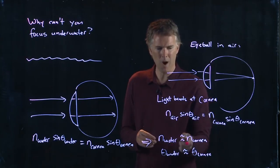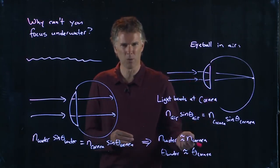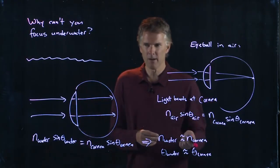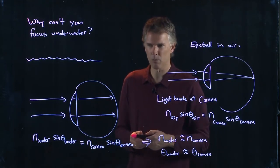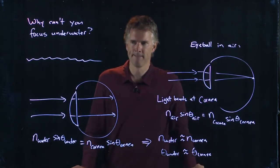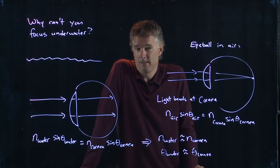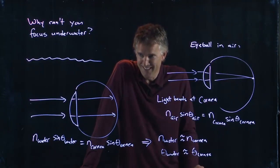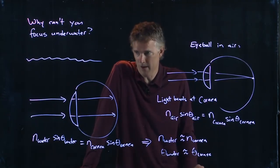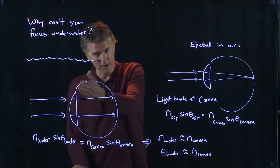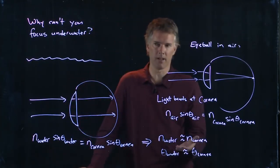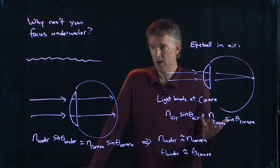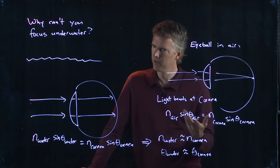Now, anybody know why this would be? Why would your cornea have nearly the same index of refraction as water? Any ideas? Because you guys are made up of water. You are mostly water. And so the cornea has nearly the same index as water because a lot of it's made of water. Sort of this gelatinous stuff, but it's the same idea.